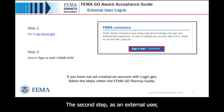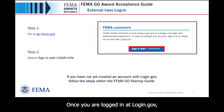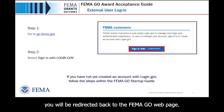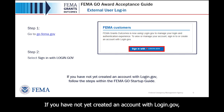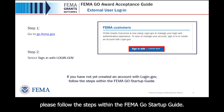The second step as an external user is to select Sign in with login.gov. Once you are logged in at login.gov, you will be redirected back to the FEMA GO webpage. If you have not yet created an account with login.gov, please follow the steps within the FEMA GO startup guide.